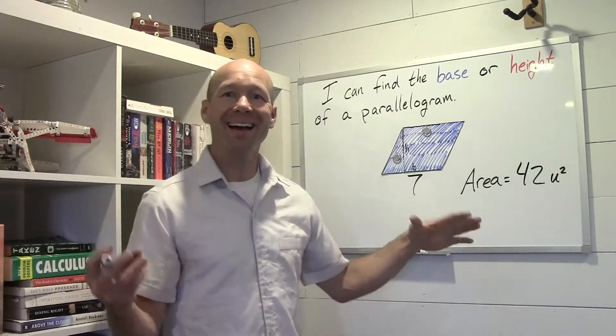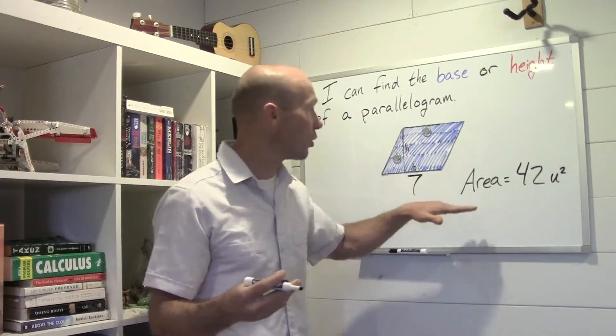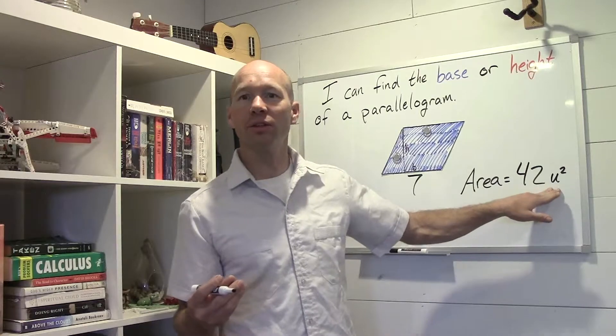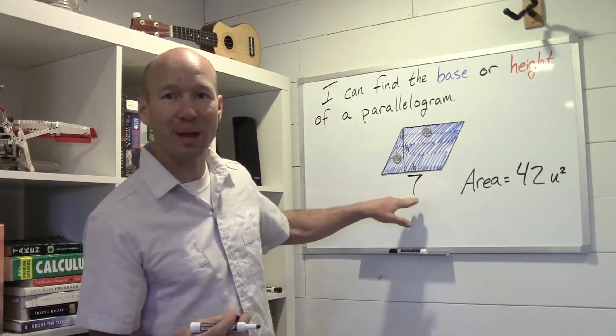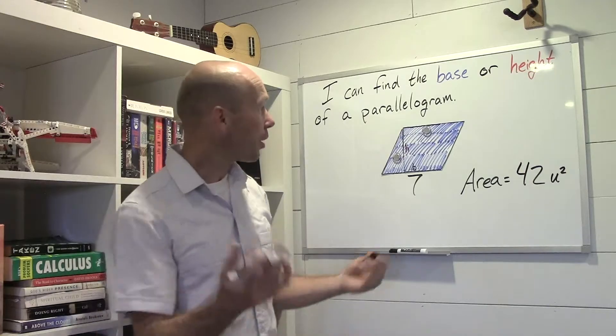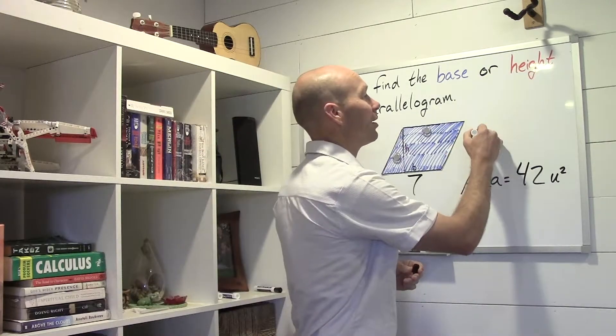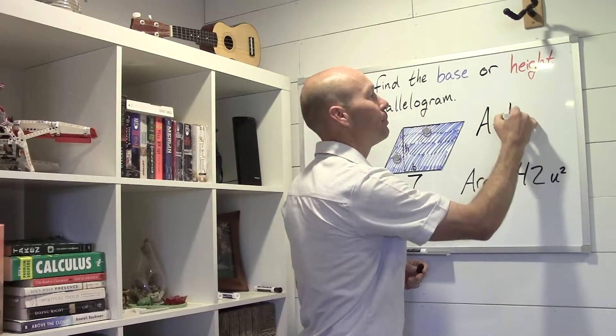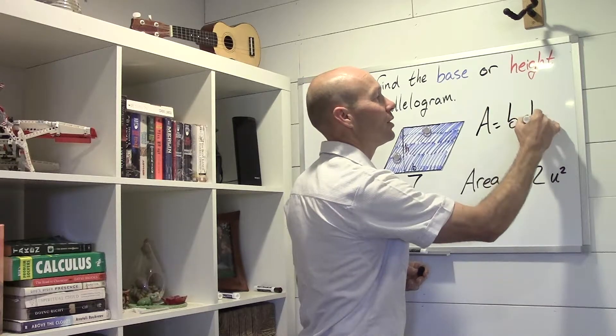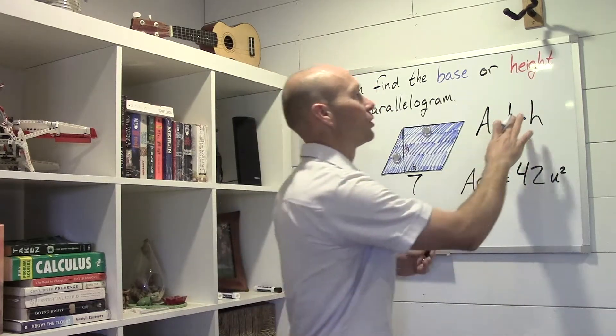So how do we find the height of a parallelogram? We know that the area is 42 units squared and the base is seven. Well, we know that the area equals the base times the height, or area equals b·h.